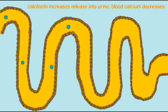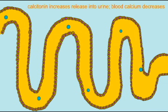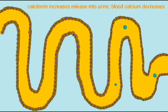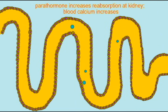Calcitonin and parathormone can also control how much calcium is released in our urine. When our blood calcium levels are too high, calcitonin will cause more calcium to be released into the urine — we reabsorb less, and therefore calcium leaves the body and blood calcium levels drop. In contrast, parathormone will increase how much calcium is reabsorbed from kidney tubules, and thus it is returned to the bloodstream and blood calcium levels rise.